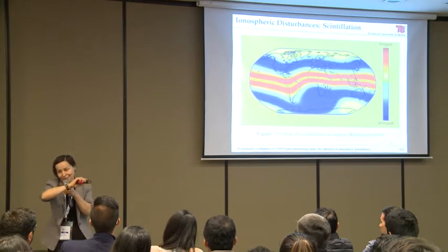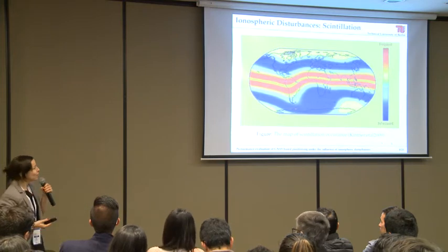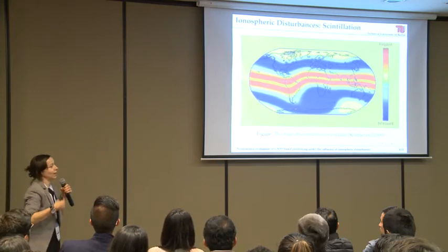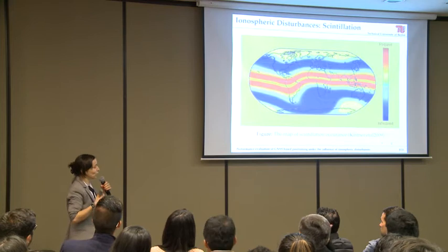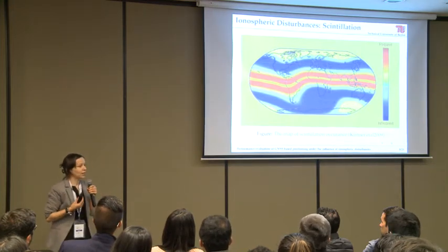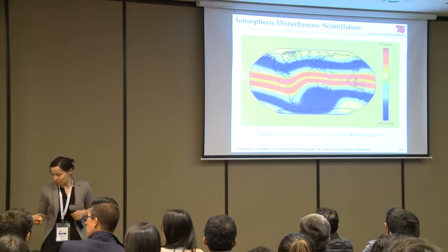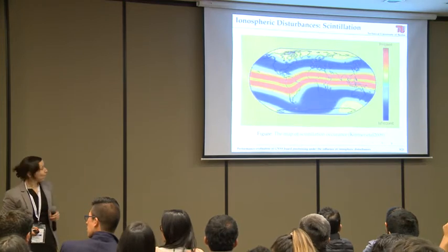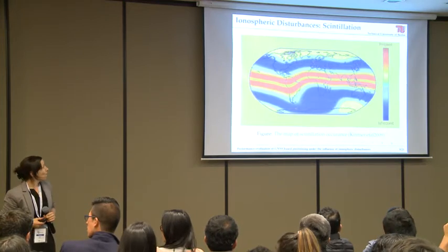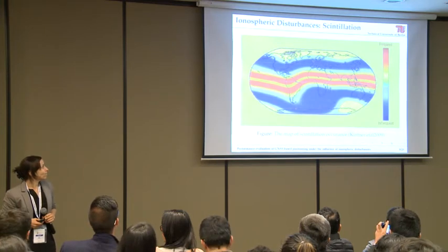Unfortunately, Colombia is located in the region where ionospheric disturbances, like signal scintillation, occur most frequently and the effect is really strong. This figure shows the effect called scintillation caused by the ionosphere, and in it you can identify three large regions of perturbation.